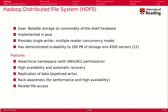HDFS has the typical features you'd expect from a distributed file system, like access control lists, Unix permissions, and a hierarchical namespace. For a distributed system, it also provides high availability and fault tolerance, with automatic recovery from hardware issues, pipelined data replication, rack awareness for performance and availability, and parallel file access across multiple nodes and processes.